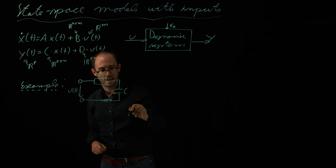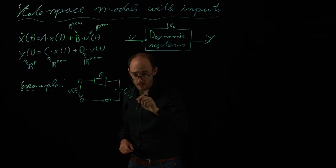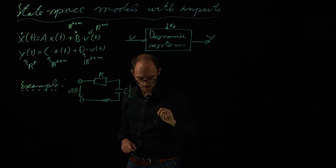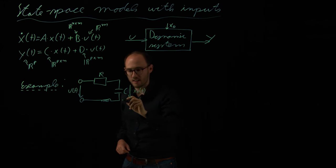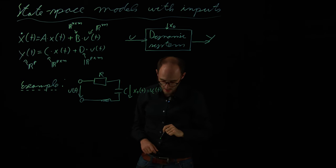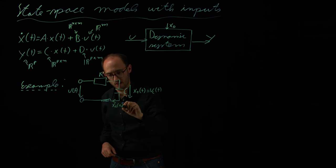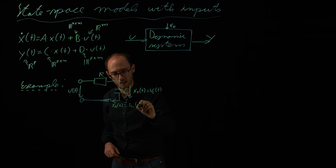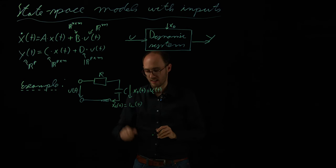So, this is our input voltage. And as states, this is now a definition, we consider the voltage across this capacitor as x1 of t. So, this would be the voltage vc. So, the voltage at the capacitor. And as the second state, we consider the current. So, that would be x2. And this is identical to iL of t. So, this would be the current flowing through this inductor.